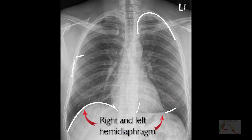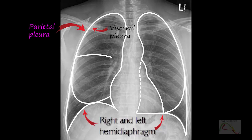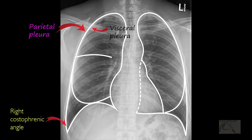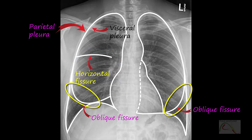The hemidiaphragms should normally have a smooth dome-shaped contour and should make sharp angles laterally, which are known as costophrenic angles. The angles medially are known as cardiodiaphragmatic angles. Pleural outlines are also drawn. This line represents the horizontal fissure, and there is also an oblique fissure. The right lung has three lobes and the left lung has only two. On a normal PA view, and rarely on lateral views, the horizontal fissure is visible as a thin line.